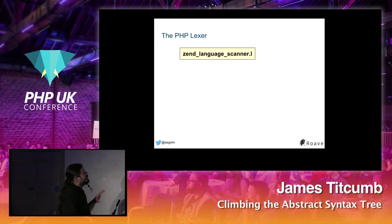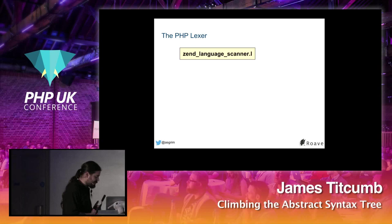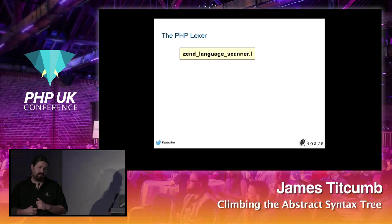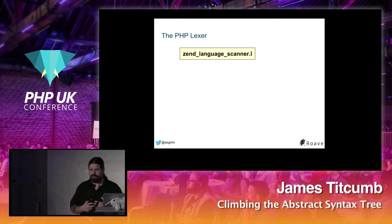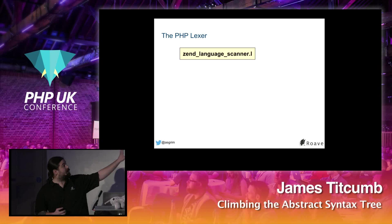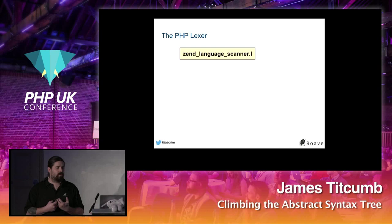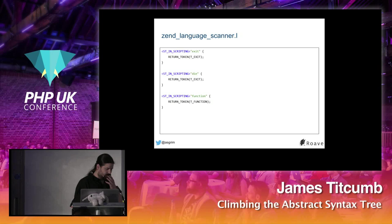The lexer in PHP is a generated program written in C. Writing one of these by hand is complicated and time-consuming, so we have a generator called RE2C. PHP uses this file called zend_language_scanner.l — the syntax definition of PHP — which describes how tokens are formed and split out.